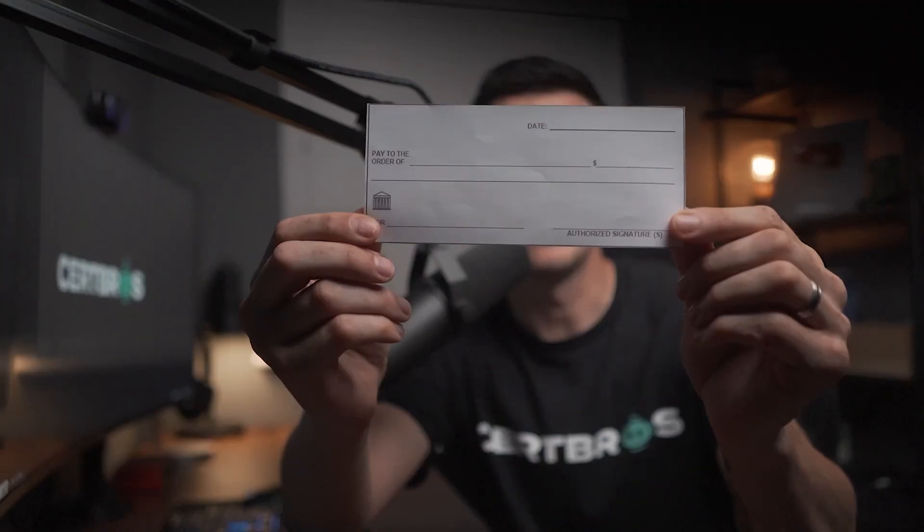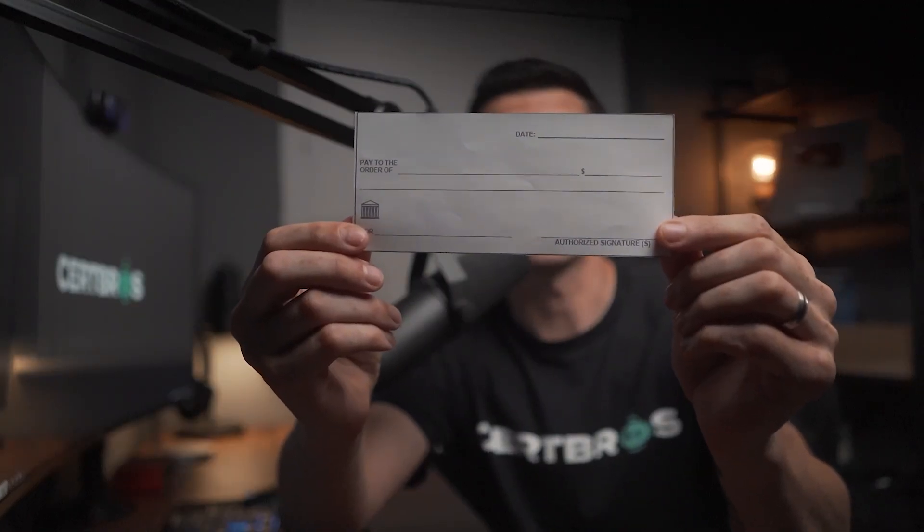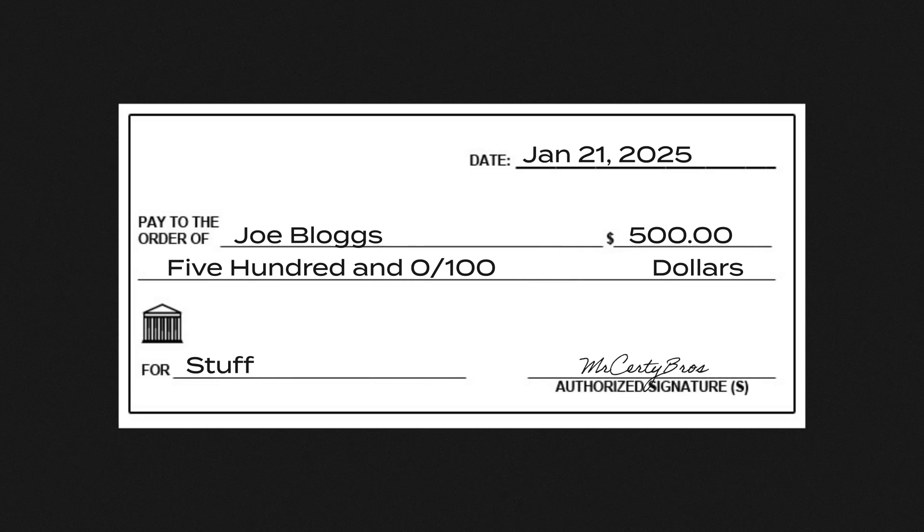Some of you may be old enough to know what this is. This is a check — or at least a picture of a check — because after all no one uses checks anymore. But checks are like little handwritten documents that instruct a bank to make payment to the receiver. It's like a bank transfer but in paper format. The check contains a few pieces of information such as the person's name, the amount to be paid, and the date. When you receive a check you need to go over to the bank, hand it to them, and they will process the payment for you.